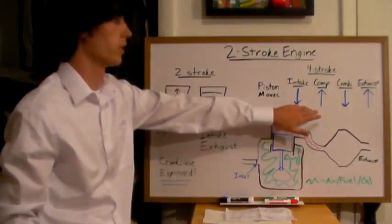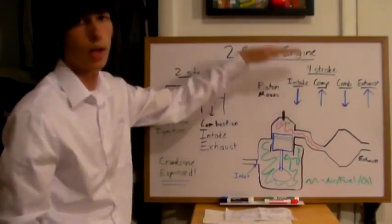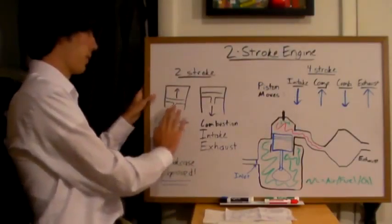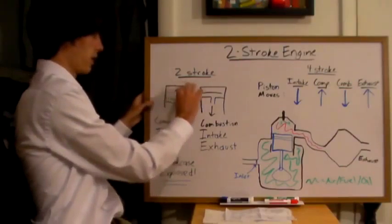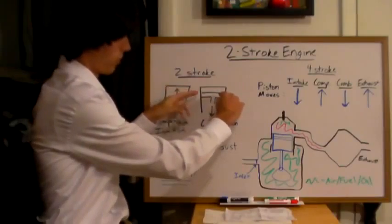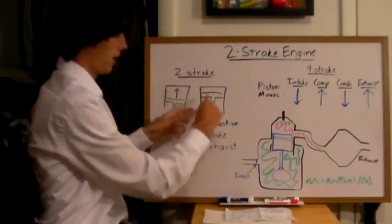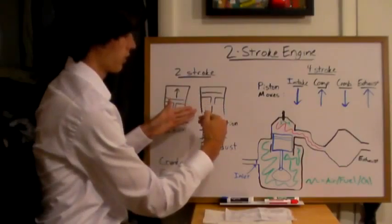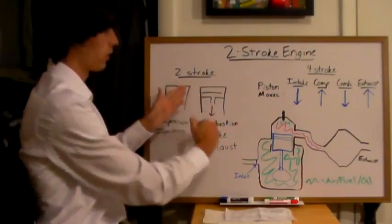Now in a two-stroke engine, you consolidate all of this to happen with the piston only going up and down once. So as the piston goes up, you have a compression cycle, and then right at the top when it stops moving, you have ignition. From there, the piston moves down, and in that step you have combustion, intake, and exhaust all in one step.